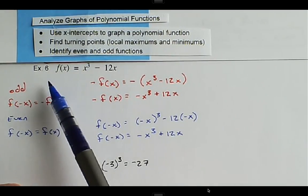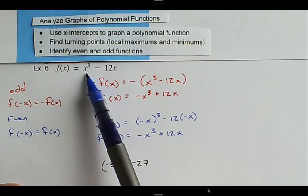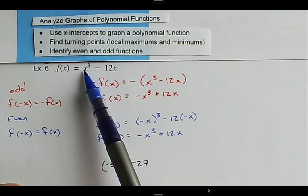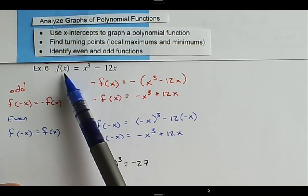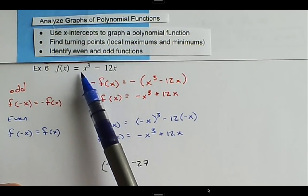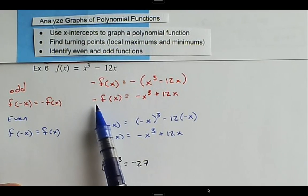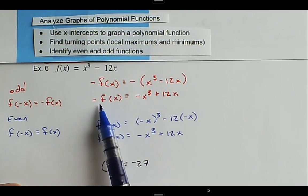So if we look at our original function f(x), we see that it is x³ - 12x. So the lead coefficient for the original function is 1. If we look at our function evaluated at for negating the entire function, the lead coefficient is negative,